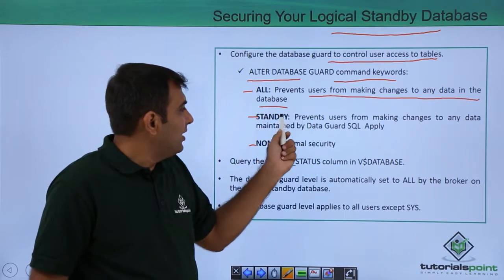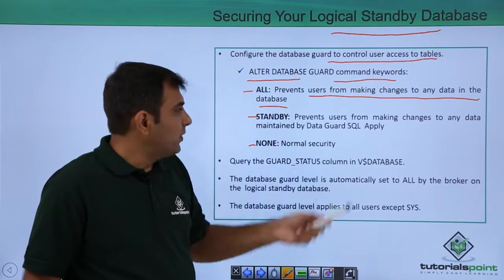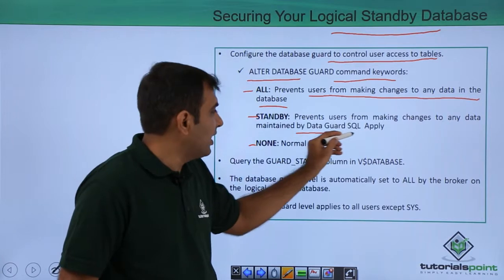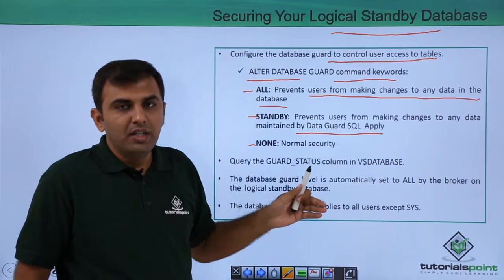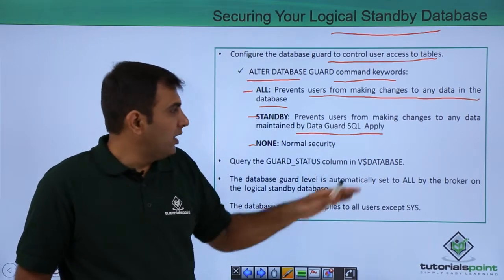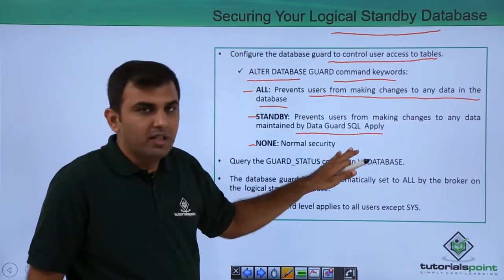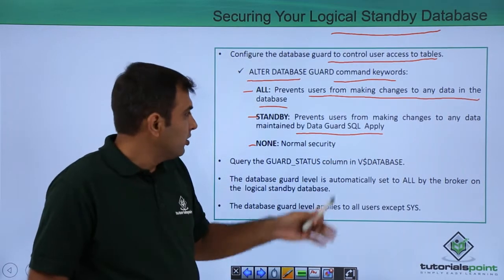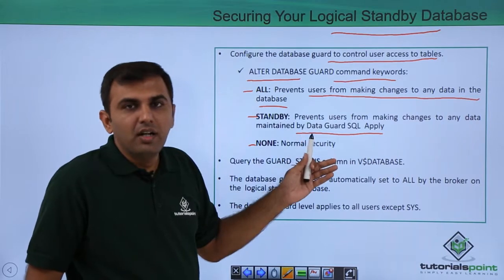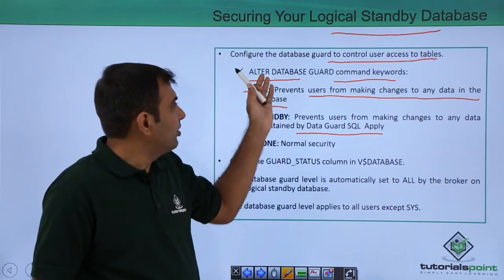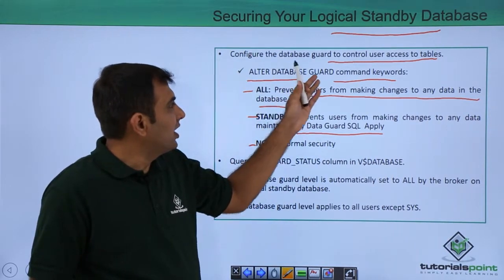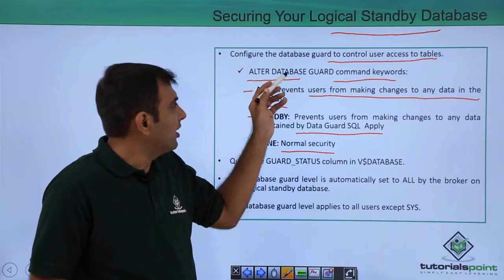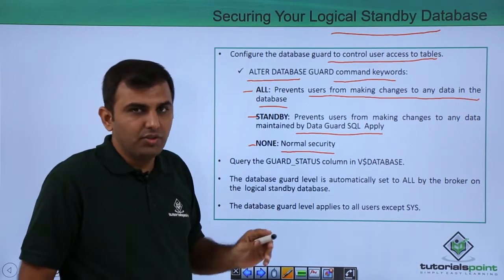Next, ALTER DATABASE GUARD STANDBY prevents the user from making changes to any data maintained by the Data Guard SQL Apply. Whatever data comes via SQL Apply from the primary to the standby, users are not able to change that data. ALTER DATABASE GUARD NONE means normal security.